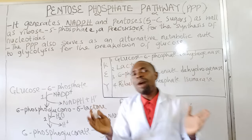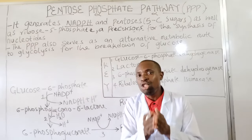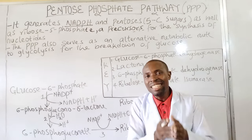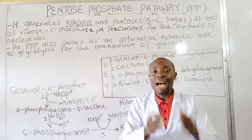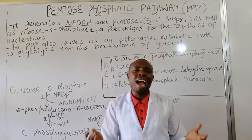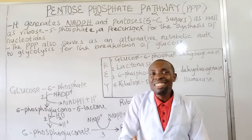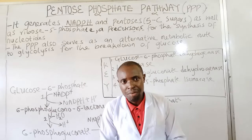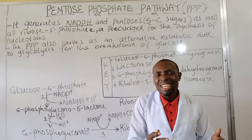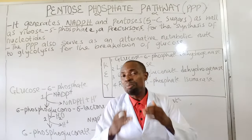In this pathway we should understand that it leads to the generation of reduced NADPH, which is the reduced nicotinamide adenine dinucleotide phosphate, and also pentoses, which are 5-carbon sugars, as well as ribose-5-phosphate, which is a major precursor in the synthesis of nucleotides. This pathway occurs in the cytosol, and in plants it occurs in the plastids.